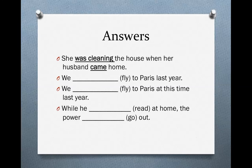Okay, let's look at the answers. The first one: 'She was cleaning the house when her husband came home.' Her husband came home at a specific time, so we use the simple past. But she was in the process of cleaning the house when that happened, so we use the past progressive.